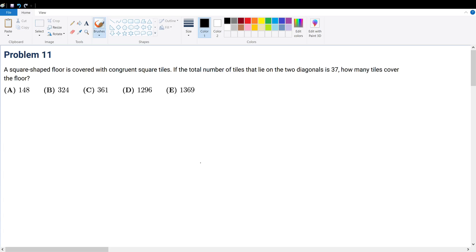Problem 11: A square-shaped floor is covered with congruent square tiles. If the total number of tiles that lie on the two diagonals is 37, how many tiles cover the floor? Well, first let's try to give ourselves a simple example.